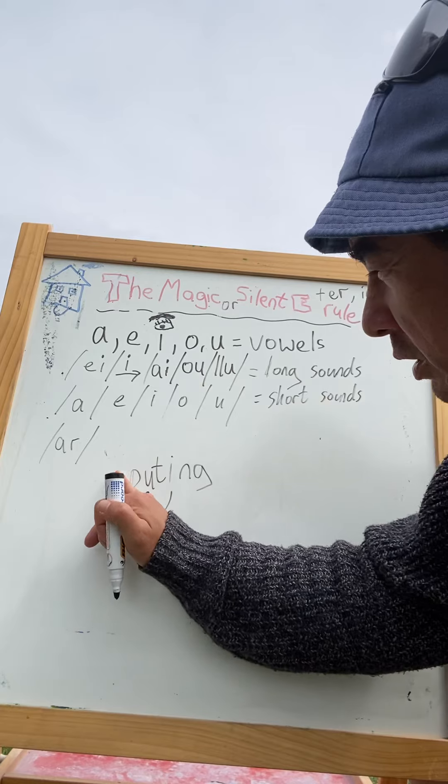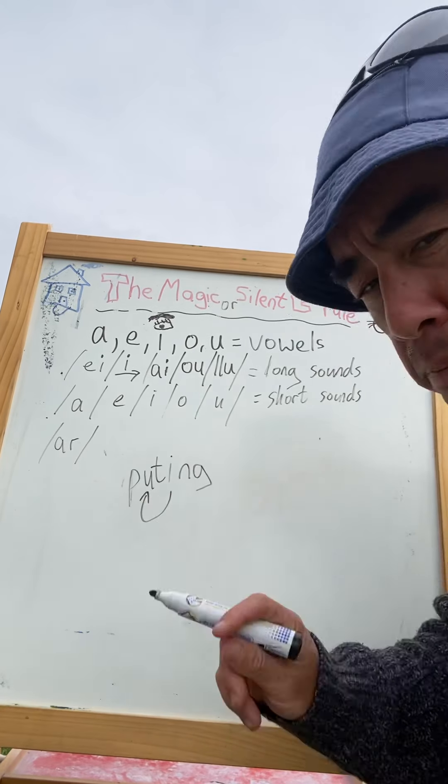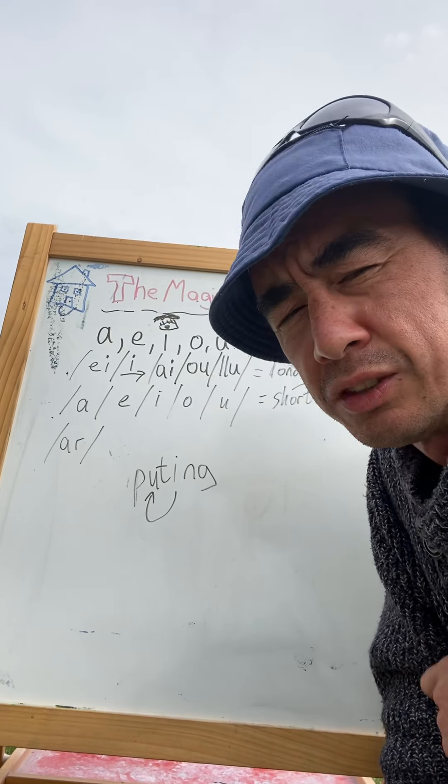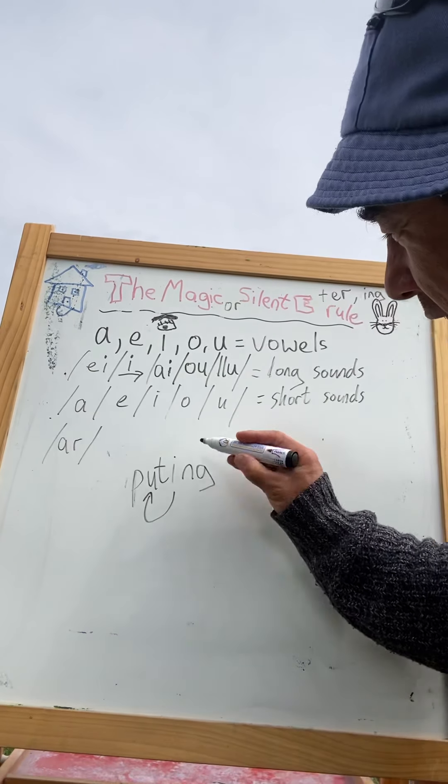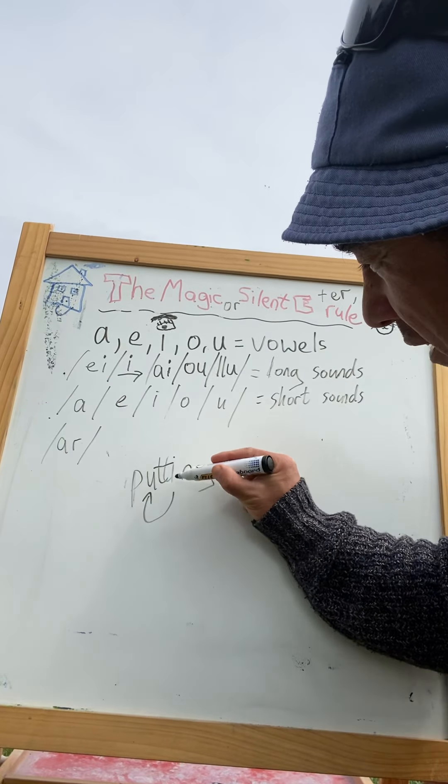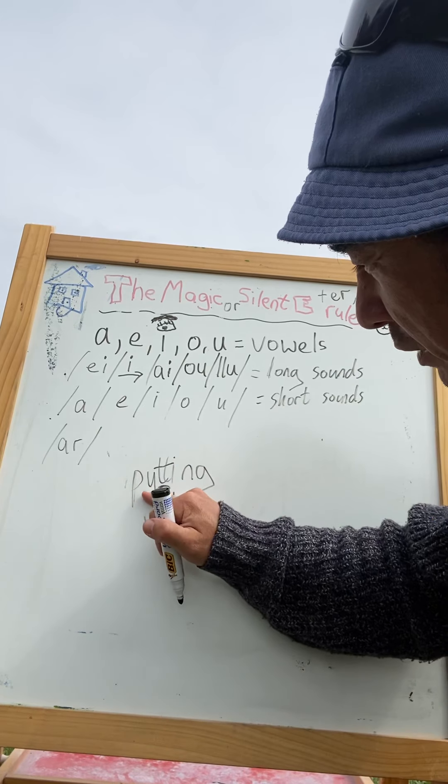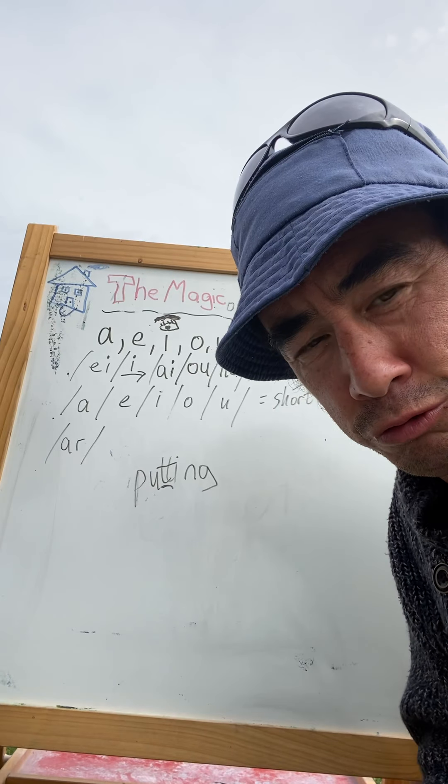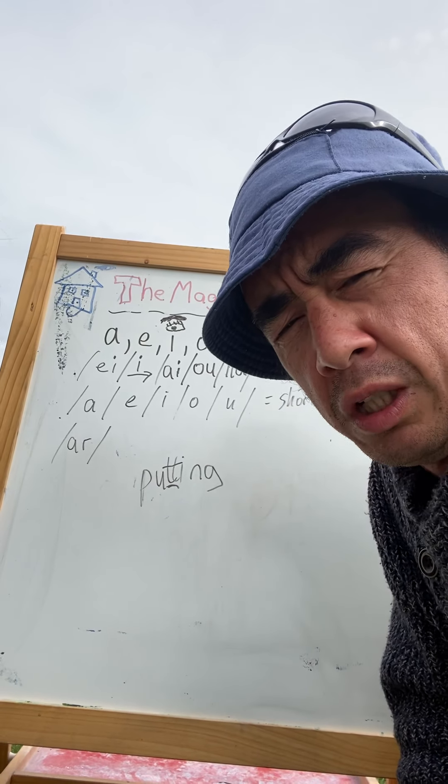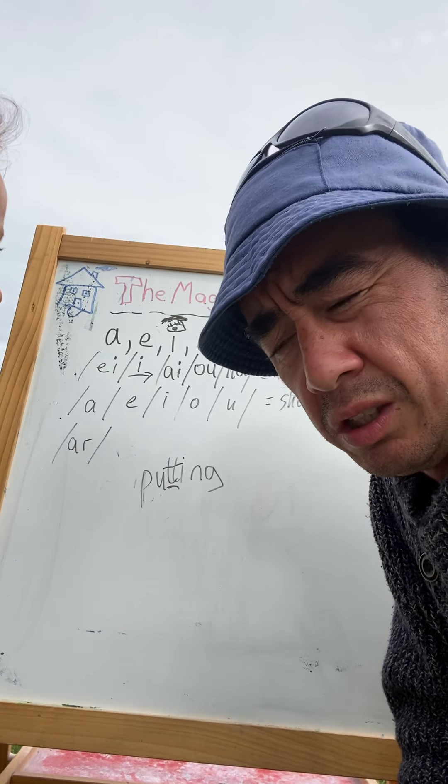So if you want to say putting, listen to the sound. Putting. It's a short sound, isn't it? But putting depends on your accent. We have many accents in the English language. So we have a double consonant to stop that affecting. It's a rule.